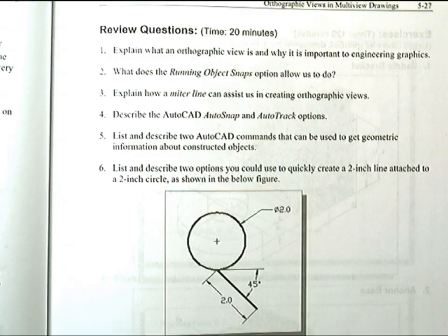Consequently, no individual view contains all the information to completely define the shape of the three-dimensional object. All orthographic views must be looked at together to comprehend the shape of the three-dimensional object.